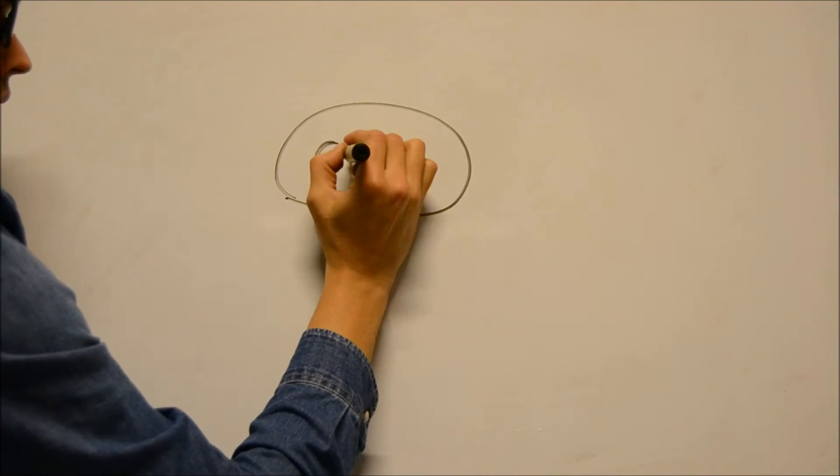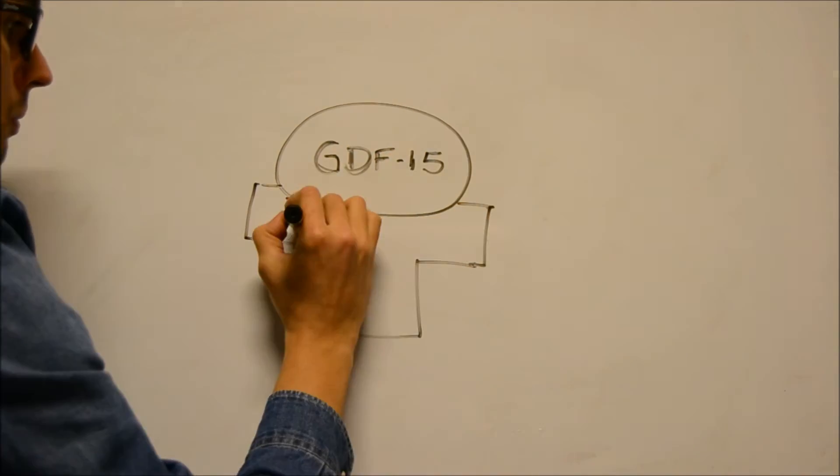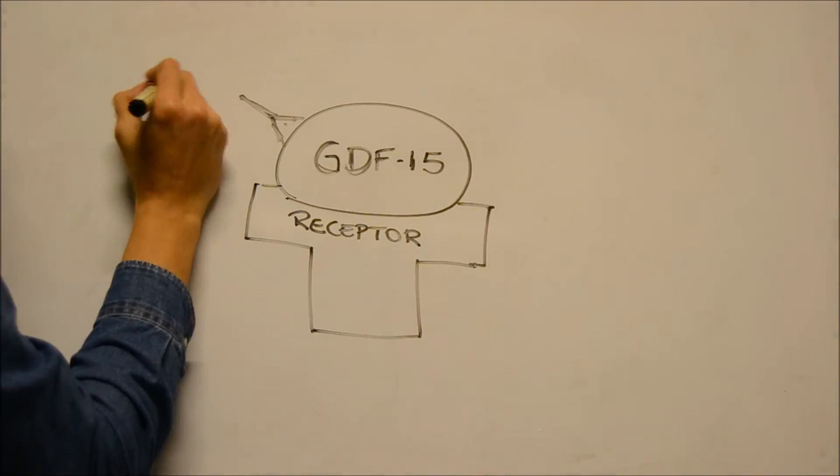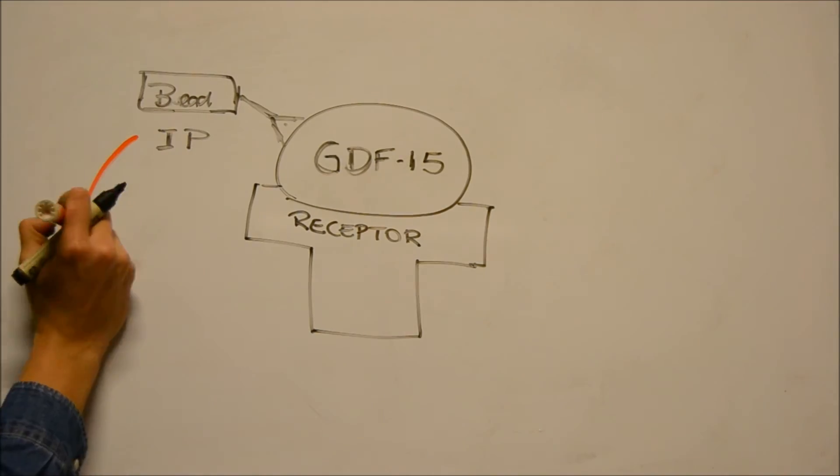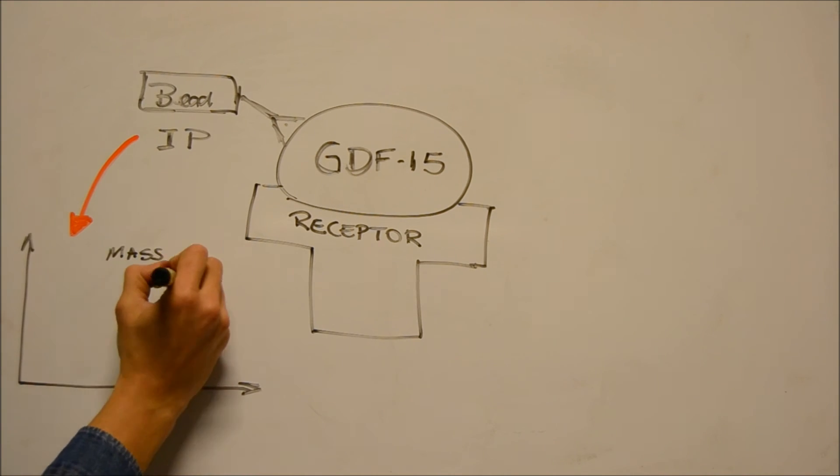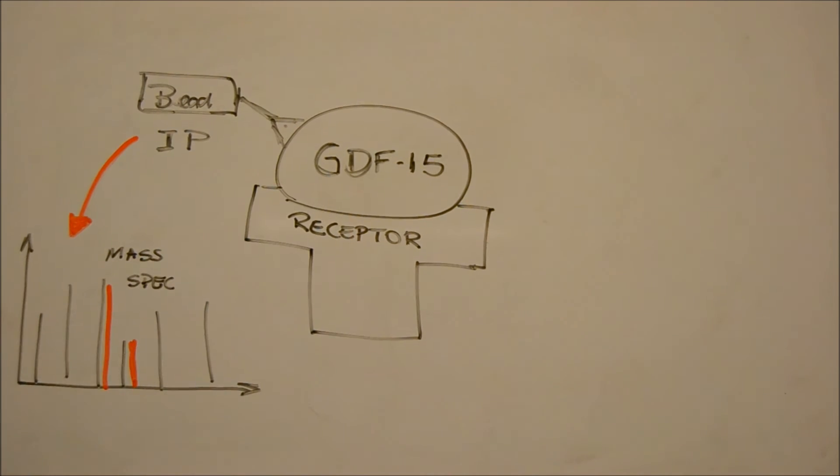However, comparing expression data can only give a correlation, but cannot be conclusive about a ligand-receptor binding. For this, we need protein interaction data. This could be accomplished by using co-immunoprecipitation of GDF-15 and subsequently identify its interactors using mass spectrometry.